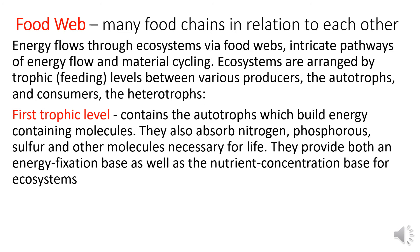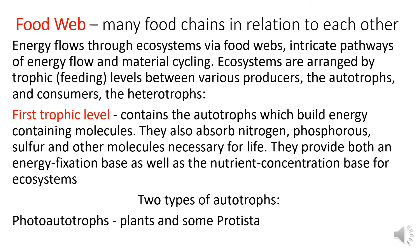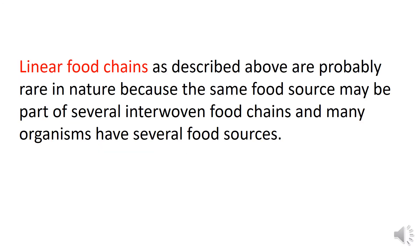The first trophic level contains the autotrophs, which build energy-containing molecules, and also absorb nitrogen, phosphorus, sulfur, and other molecules necessary for life, providing both an energy fixation base and a nutrient concentration base. There are two types of autotrophs: photo-autotrophs, which include plants and some protista, and chemo-autotrophs like bacteria. Linear food chains are probably rare in nature because the same food source may be part of several interwoven food chains, and many organisms have several food sources.